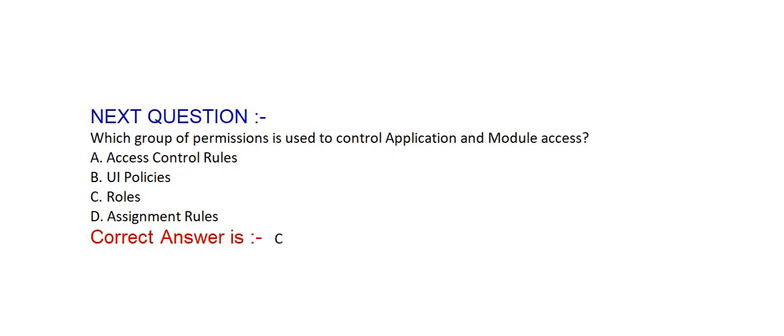Which group of permissions is used to control application and module access? Option A: access control rules. Option B: UI policies. Option C: roles. Option D: assignment rules. Correct answer is option C — roles.